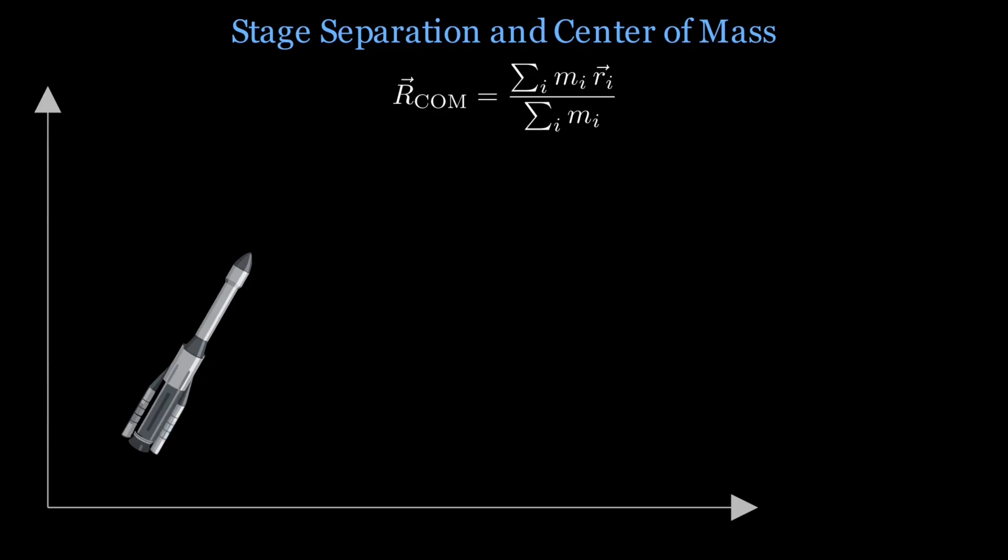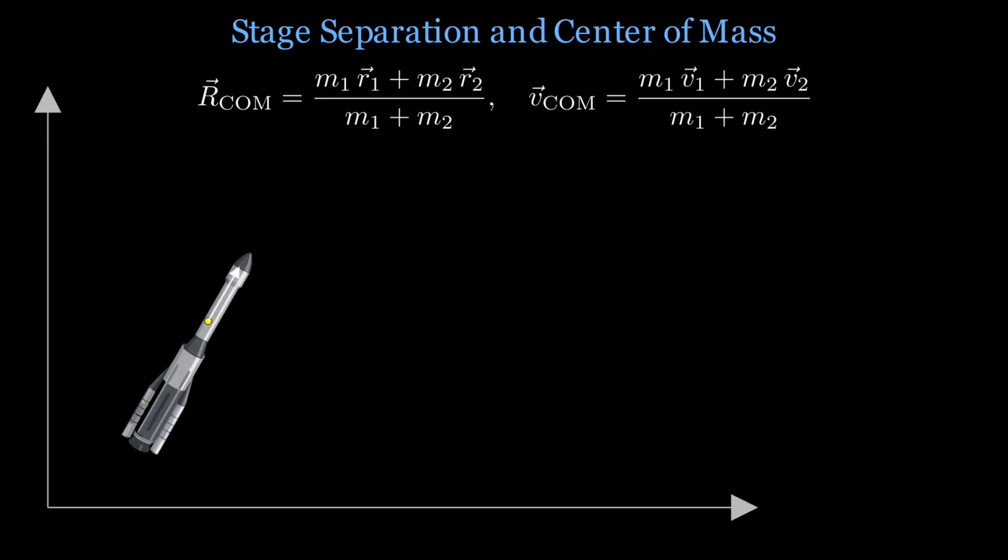This also implies that the motion of the center of mass of the rocket does not change. To understand the concept of center of mass, think of the two-stage vehicle as a combined body with a balance point, which is the weighted average of where the mass can be thought concentrated. External forces determine how that point moves, while internal pushes only shuffle momentum inside the system. So without an external shove, the center of mass of the combined system travels along the same path the rocket would have taken, had there been no separation.